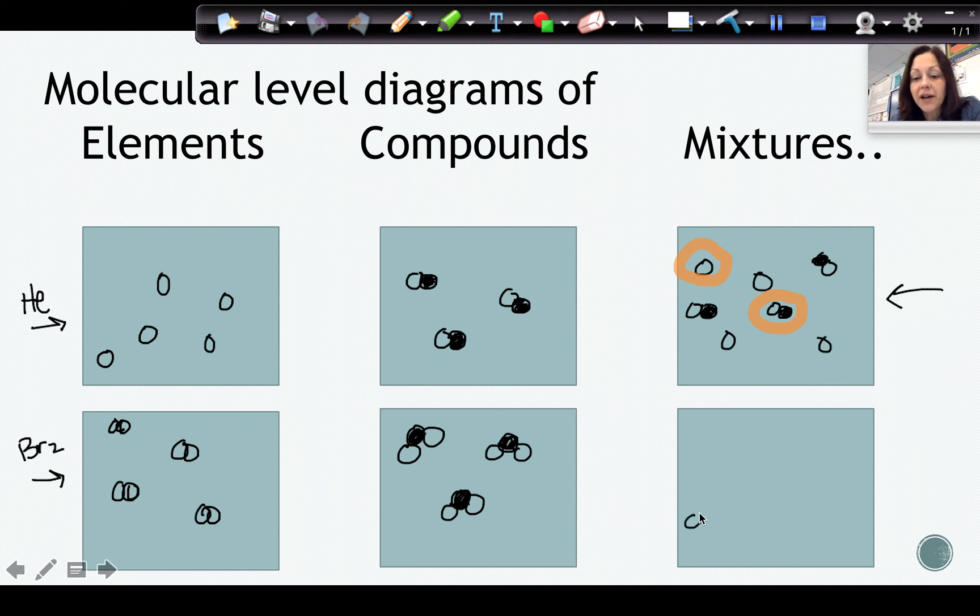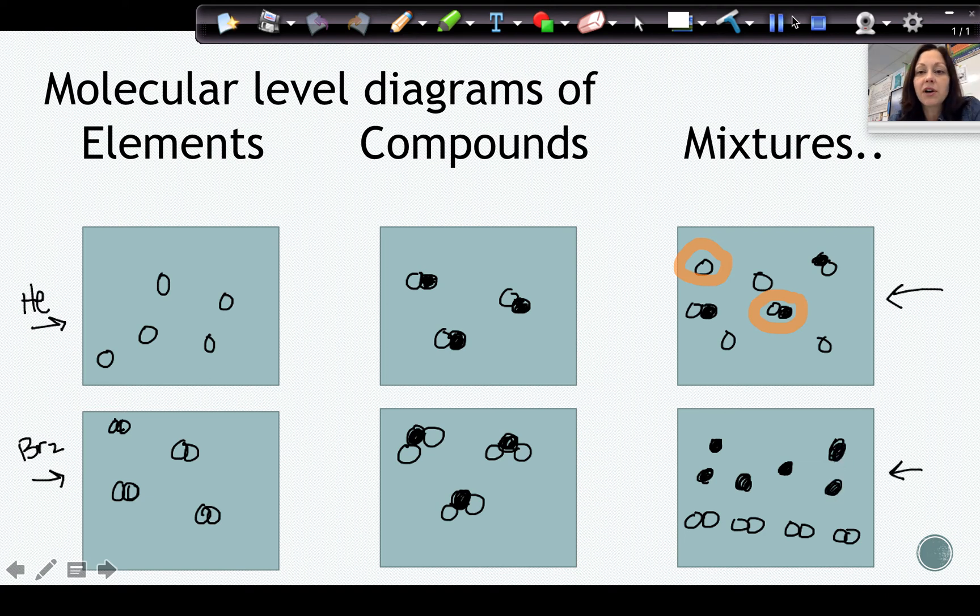Now this mixture would be considered a homogeneous mixture because it's evenly mixed, whereas if we saw something with layers or clumps where all of the same kind was in the same section and all of the other kind was in a different section, this mixture down here would be considered a heterogeneous mixture because it's layered.